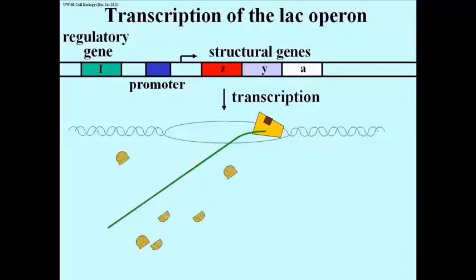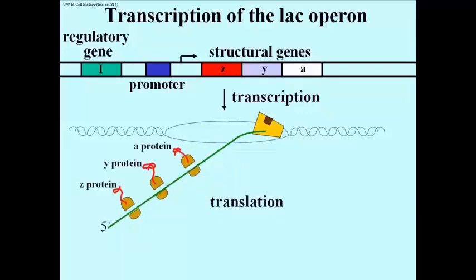So what's going to happen here is, ribosomes are going to assemble at three different points on this mRNA. The ribosomes are going to move along the message, along each of the genes, and translate the Z, the Y, and the A protein.